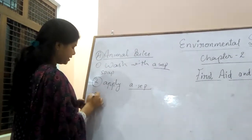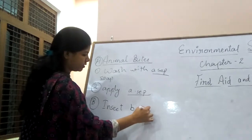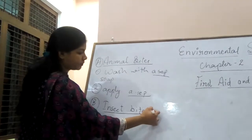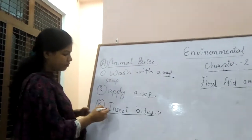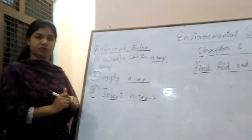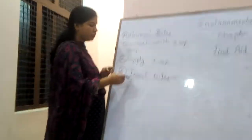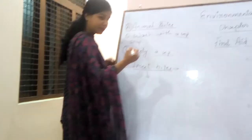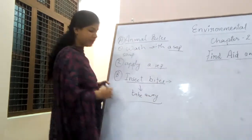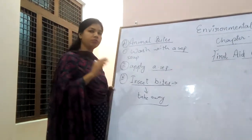Next is insect bites. When an insect bites anybody, what should we do? We have to take that patient away from that area so that no more bites will occur — that is, avoid more bites. So the first step is to take the person away to avoid more bites.